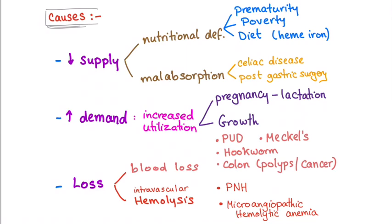Loss includes blood loss or intravascular hemolysis. Blood loss causes include peptic ulcer disease and Meckel's diverticulum. Peptic ulcer is usually seen in adults, while Meckel's diverticulum is seen in kids.